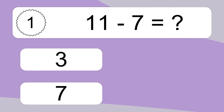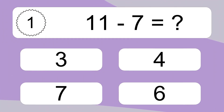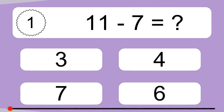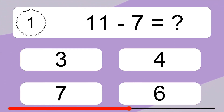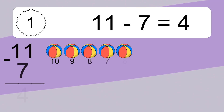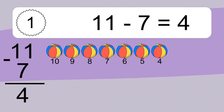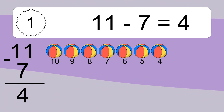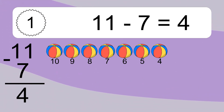11 minus 7 equals what? 11 minus 7 equals 4. Let's count it: 10, 9, 8, 7, 6, 5, 4.